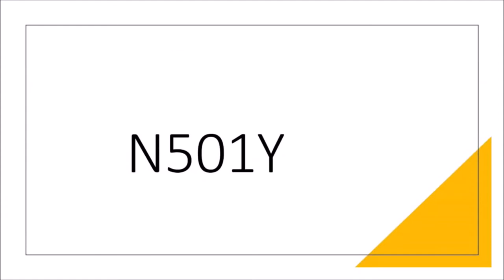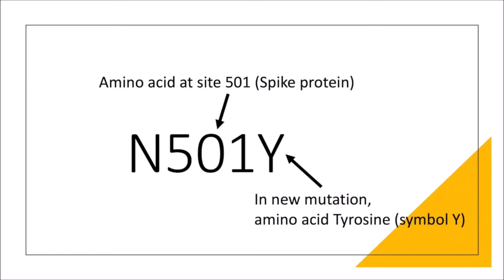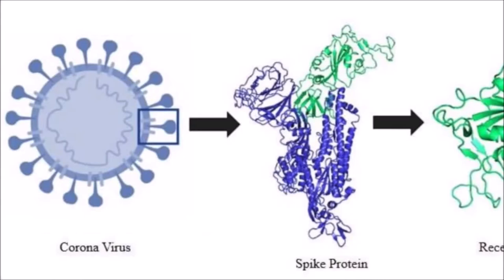Probably the most interesting mutation in the B.1.1.7 lineage is called N501Y. The name N501Y means that the mutation has caused the amino acid at site 501 to become tyrosine, symbol Y, whereas earlier versions of the virus had created the amino acid asparagine, or symbol N.